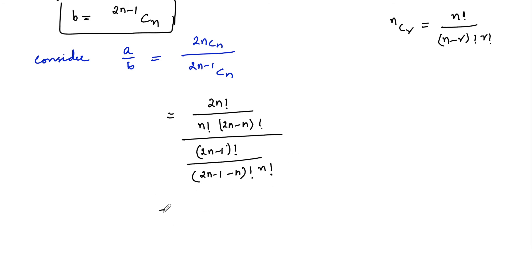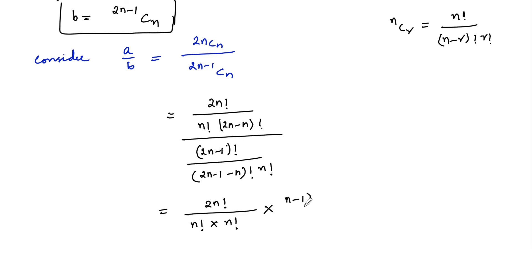This can be written as 2n factorial upon n factorial into n factorial. The division is nothing but multiplication with the reciprocal, so we take the denominator terms: n minus 1 factorial into n factorial upon 2n minus 1 factorial.